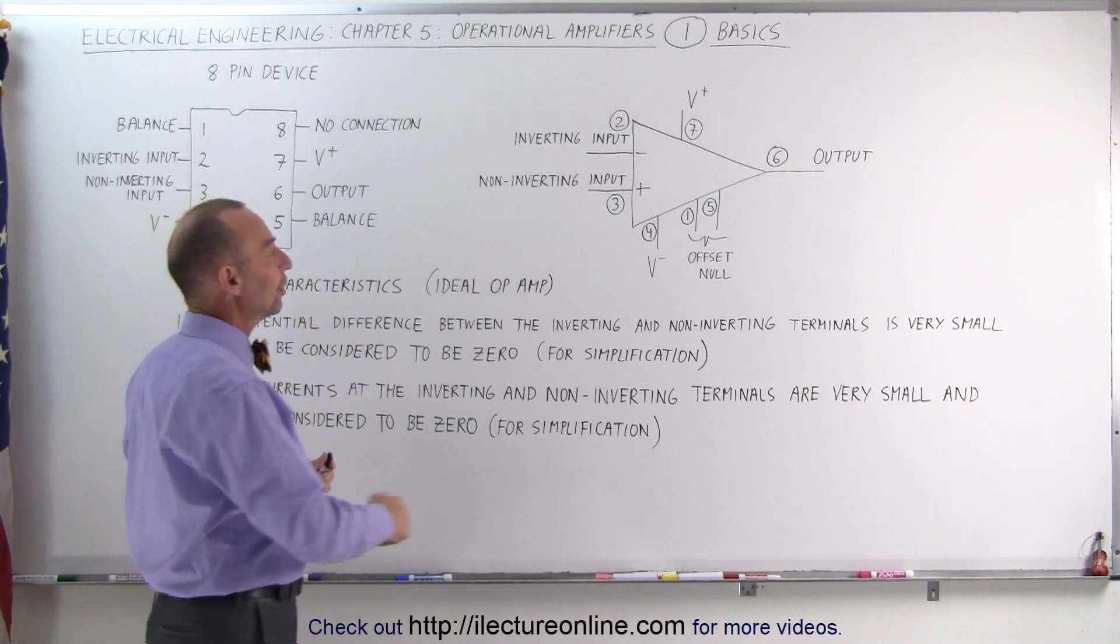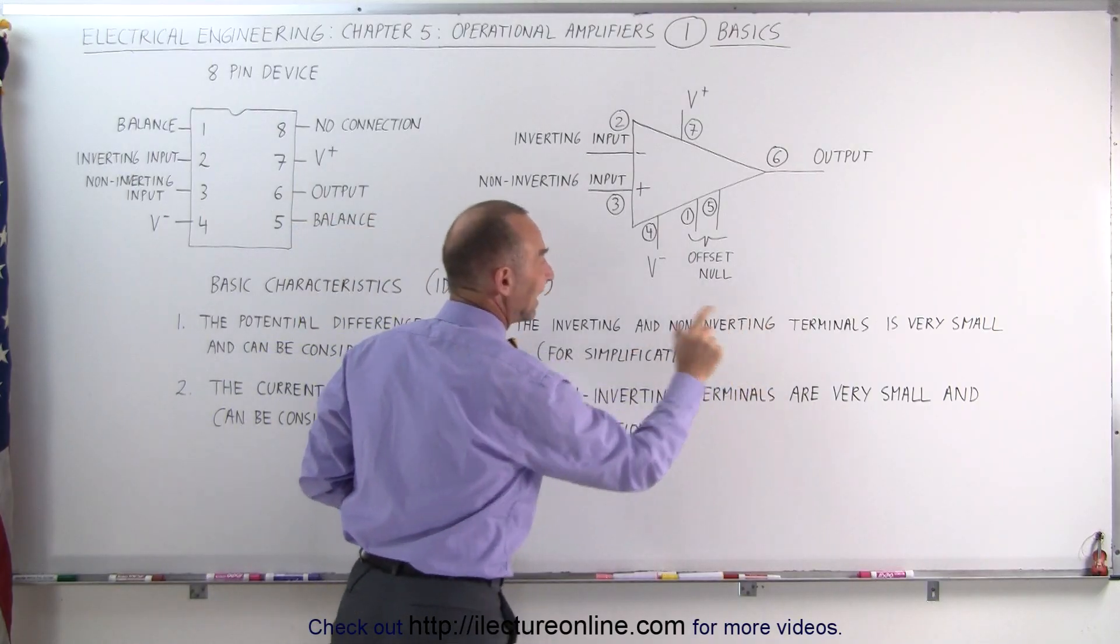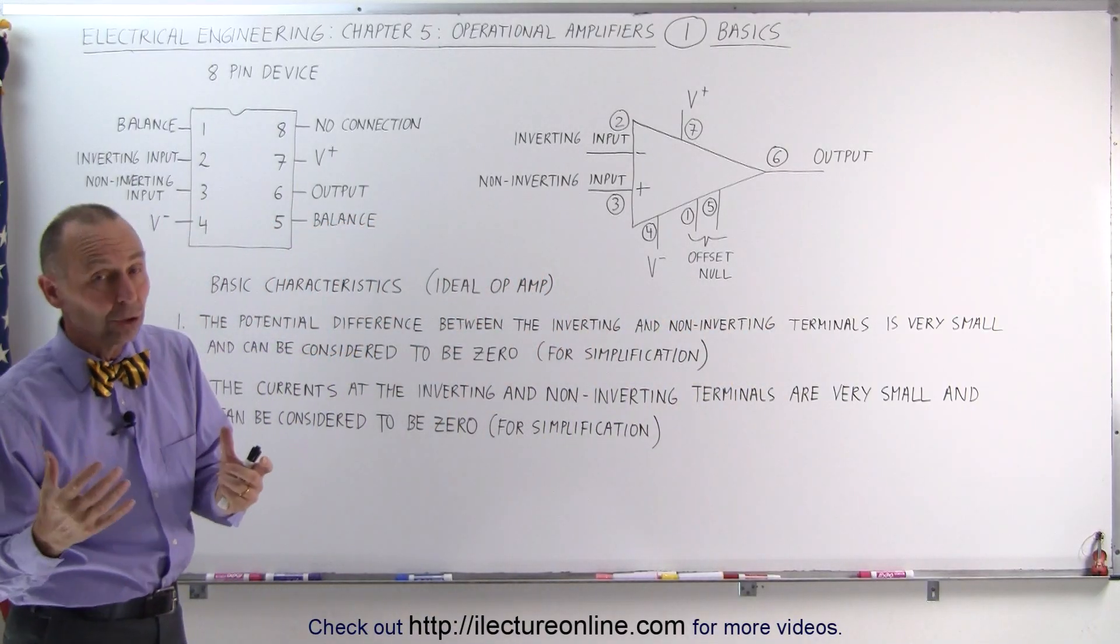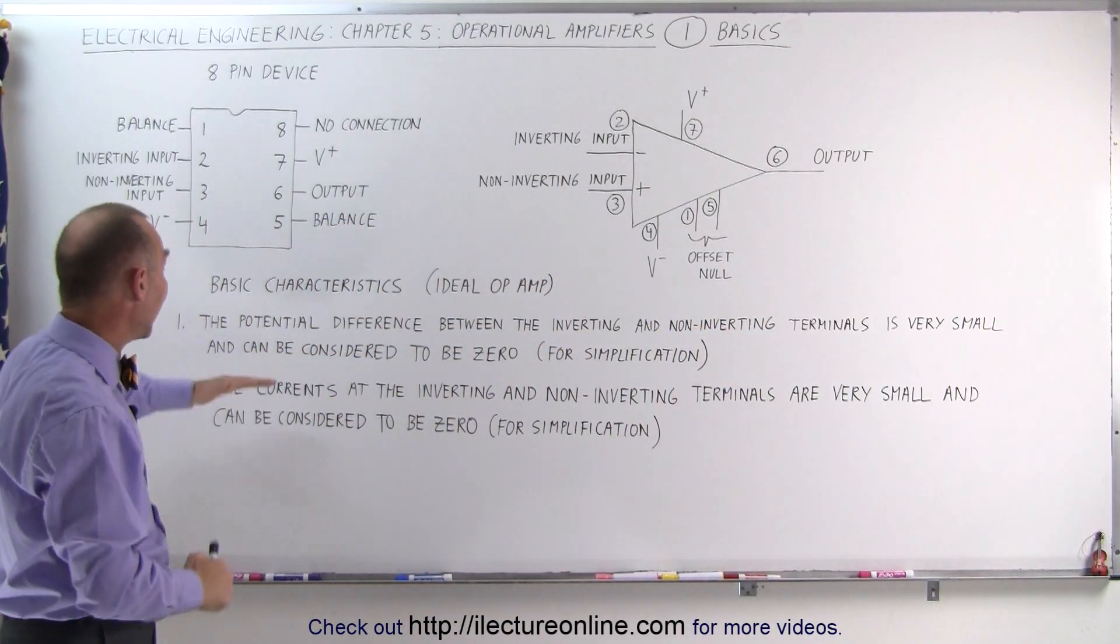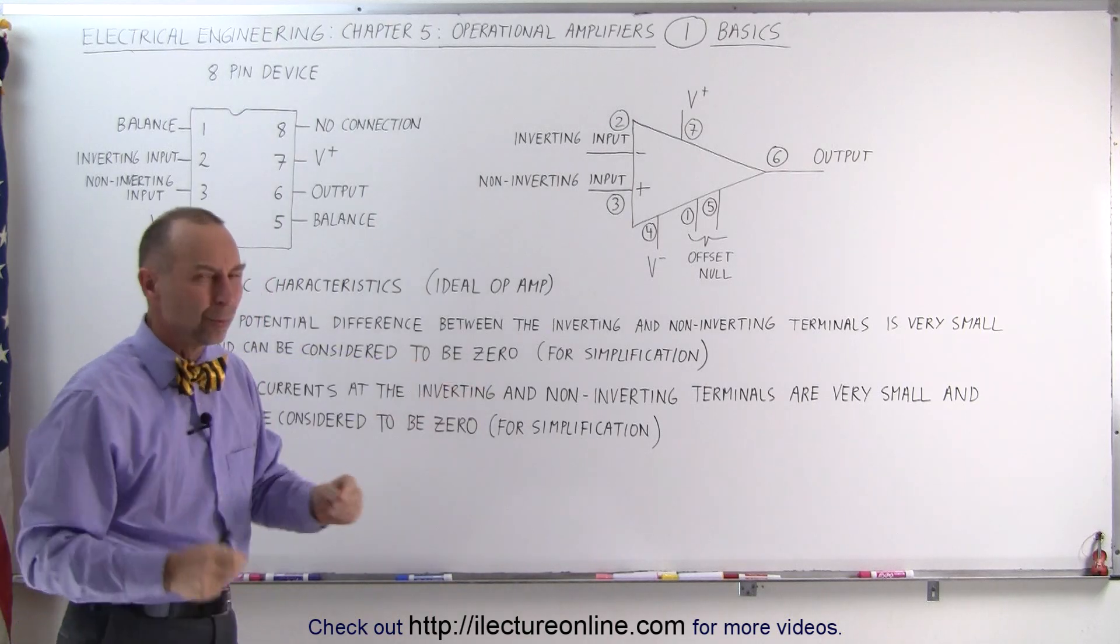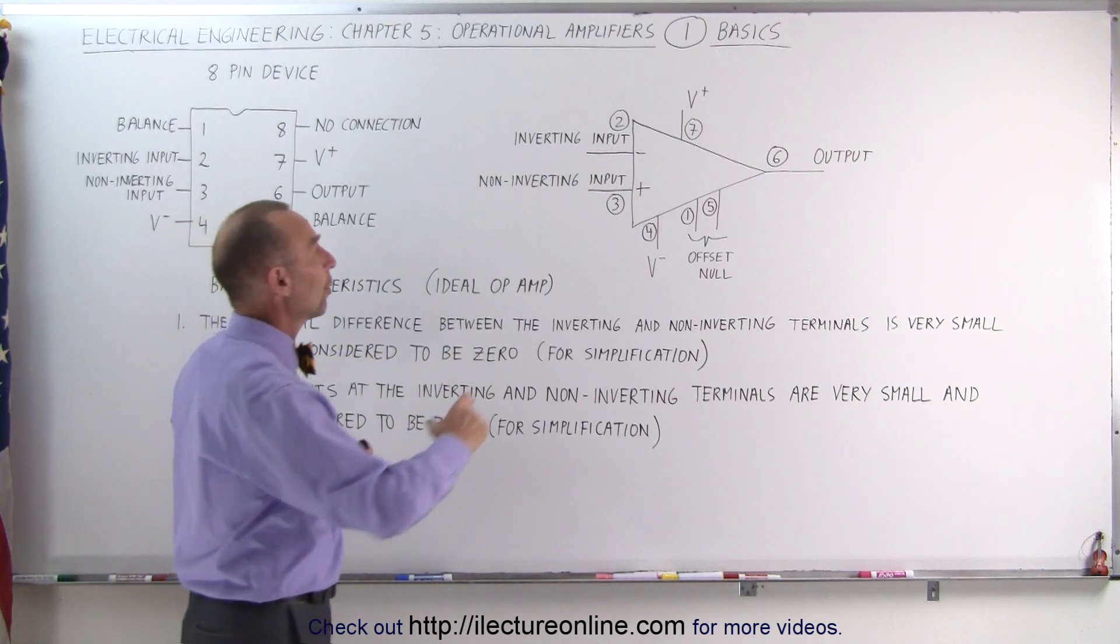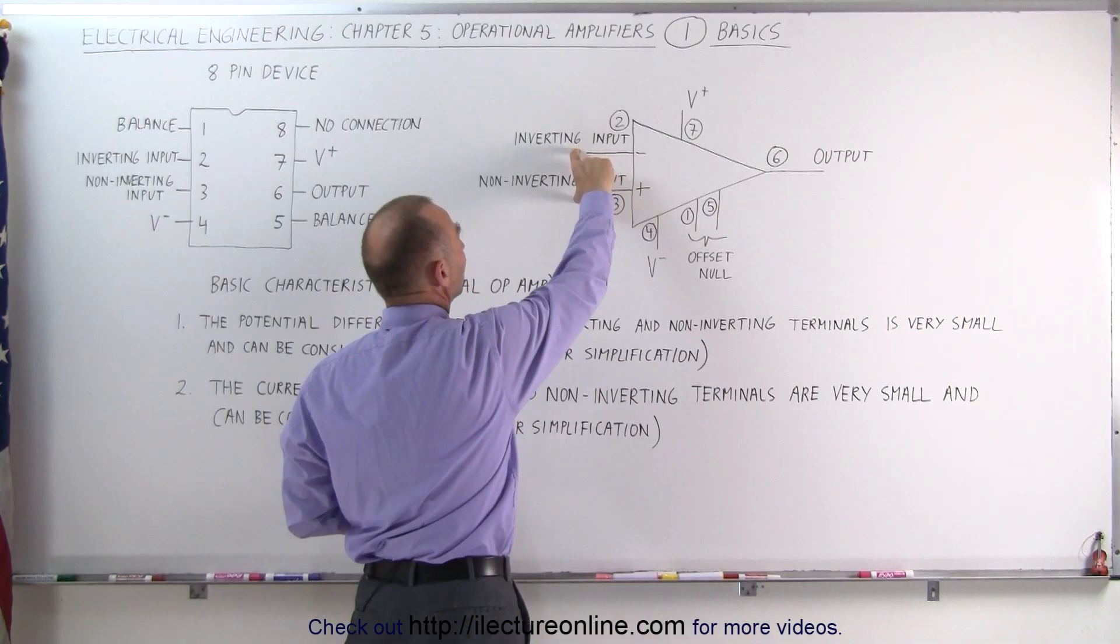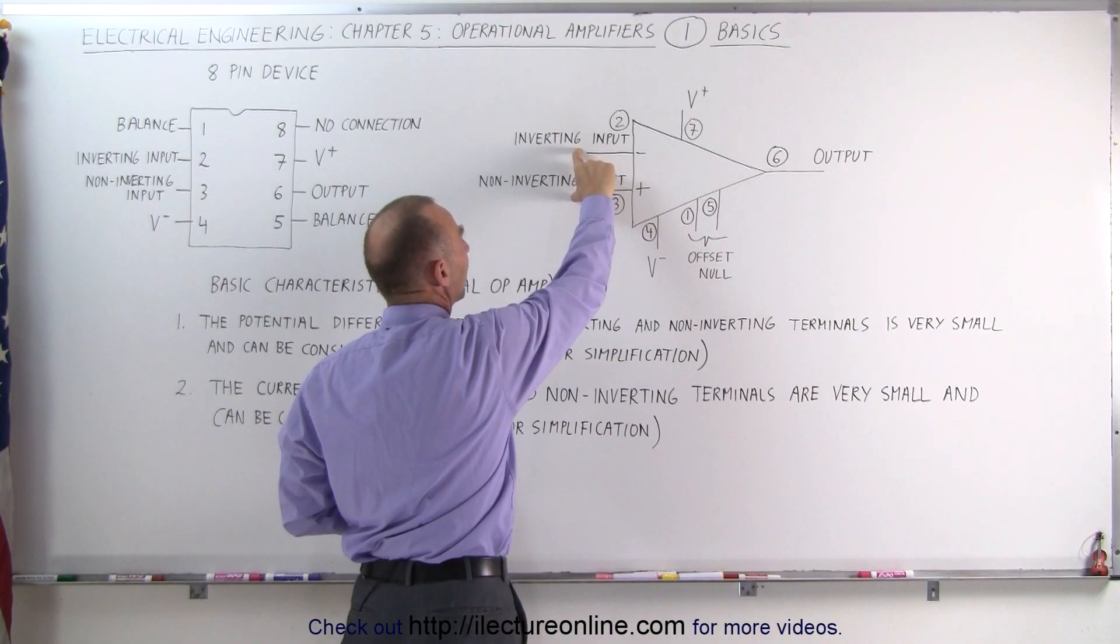First of all, the potential difference between the inverting and non-inverting terminals is very small. We can simply ignore it and consider it to be zero, and that really simplifies the problem. So what we're going to do is assume that the potential difference between these two pins is zero.